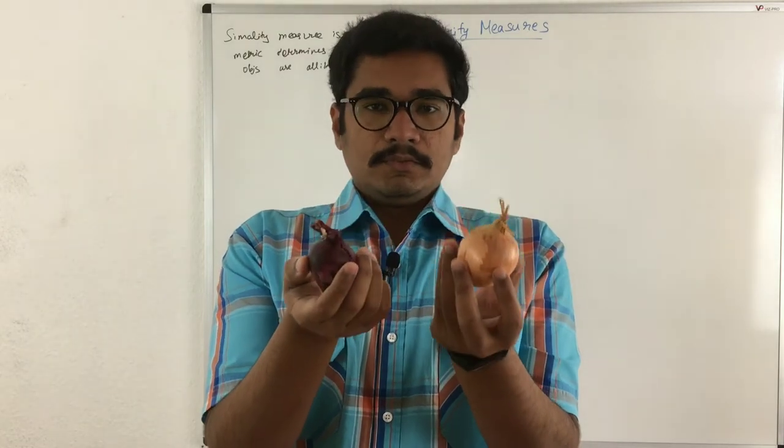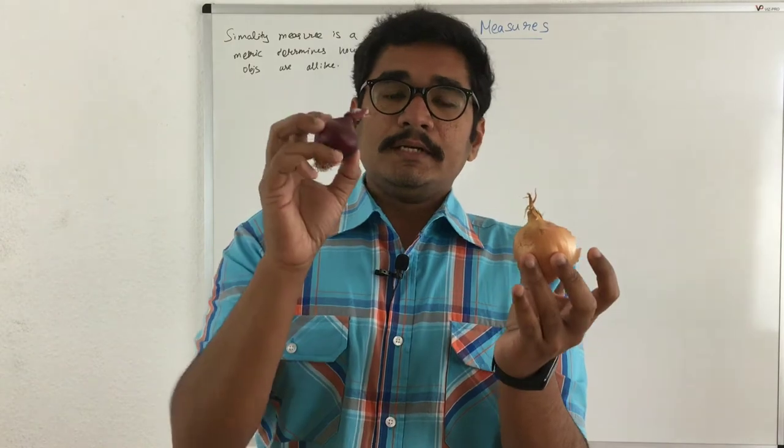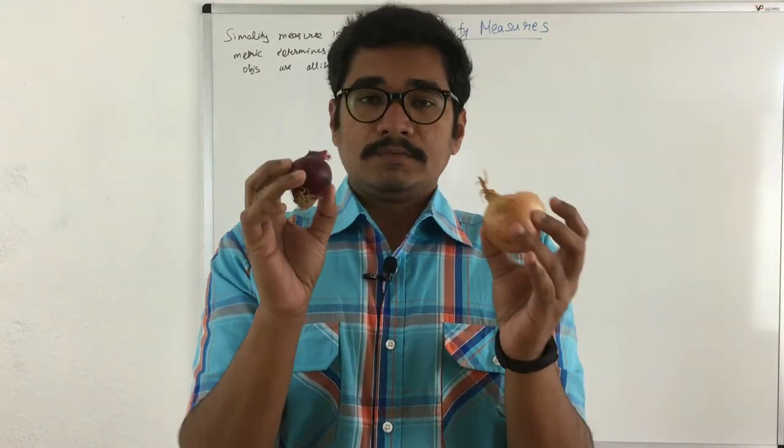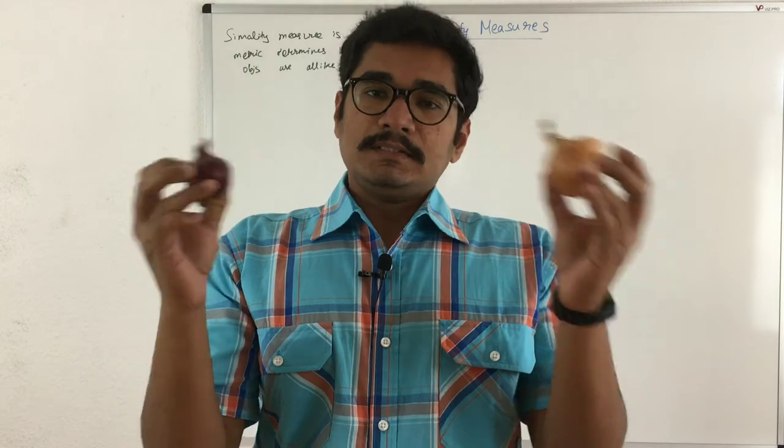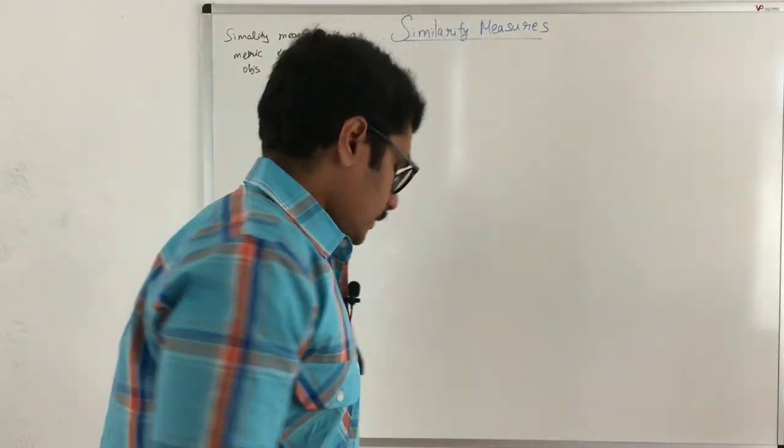So we can say that these are two different objects, but it belongs to one class, means they belong to one class of onion, but we clustered them separately. That's why it's being sold separately.